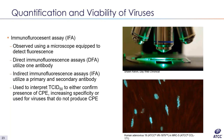Once the incubation period of a TCID50 has ended, the cell monolayers are fixed and stained using either the direct or indirect method. With direct antibody staining, the primary antibody is directly conjugated to a fluorophore. For the indirect method, the primary antibody is unconjugated and a fluorophore-conjugated secondary antibody directed against the primary antibody is used for detection. A photo of VR-1979, a human adenovirus recently adapted to a new cell line, shows green fluorescence indicating the presence of the virus, clearly visualizing the infected cells.